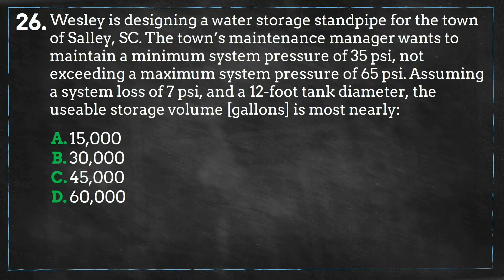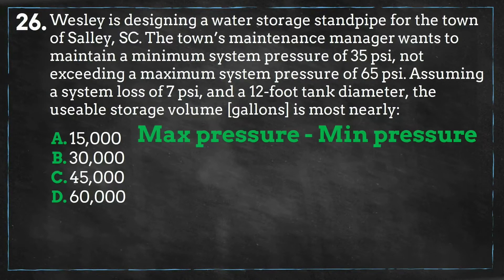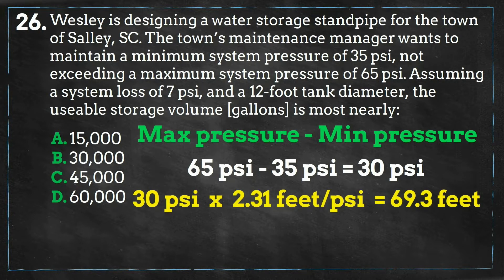We have a 12-foot diameter tank, and to find the volume of this tank in gallons, we need to determine the tank's height. We have the minimum and maximum system pressure requirements and know how many feet of head it takes to achieve those pressures. We are not interested in the total elevation of the tank, so the system's pressure loss will not be a factor. We only want the tank's height, so we take the difference of the system pressure minimum and maximum, which equals 30 PSI, multiply by the factor of 2.31 feet per PSI, and get the height of the tank, which equals 69.3 feet.